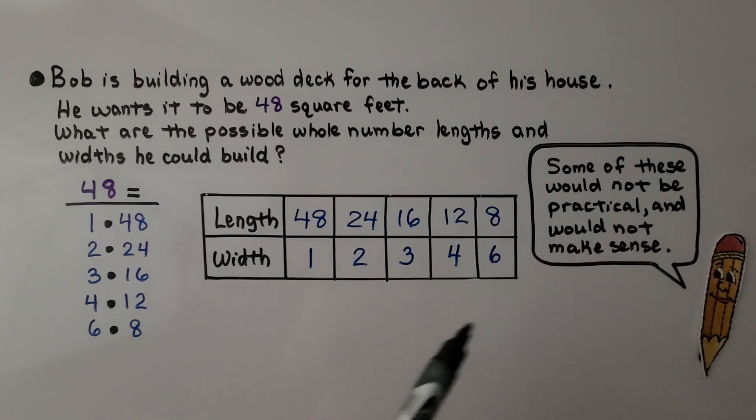So his lengths could be 48, 24, 16, 12, 8. The widths can be 1, 2, 3, 4, 6.